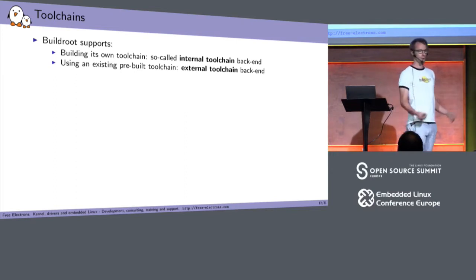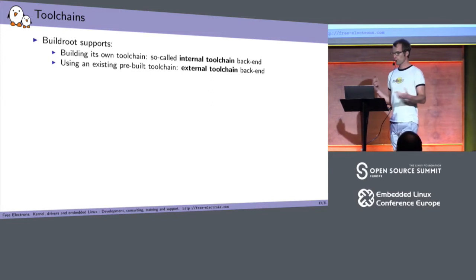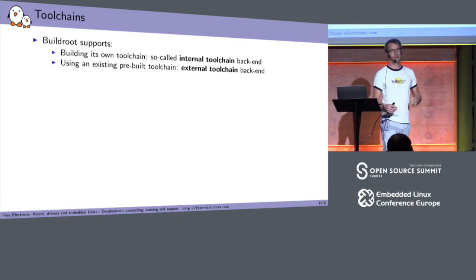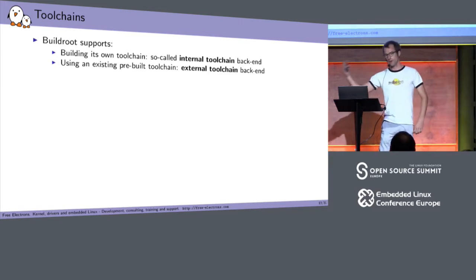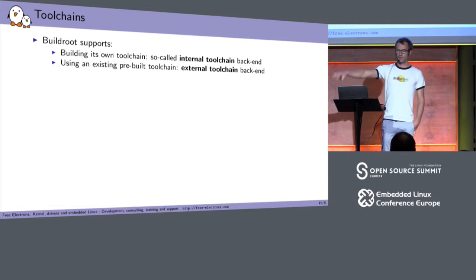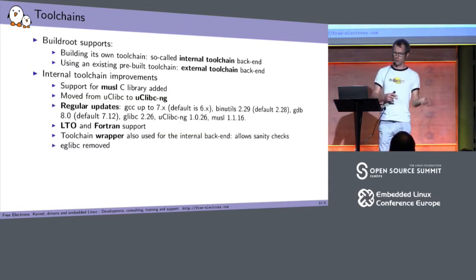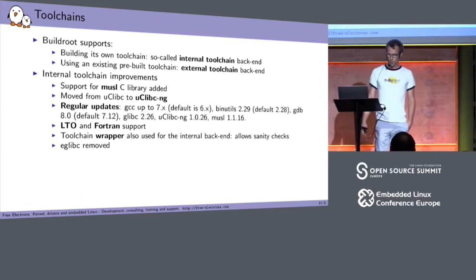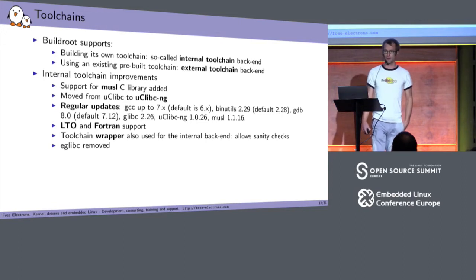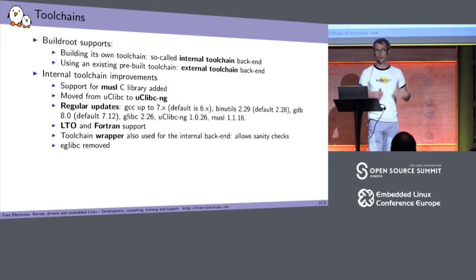On the toolchain side, Buildroot supports two mechanisms: we can either build our own toolchain — where Buildroot builds binutils, first-stage GCC, the C library, and the final GCC — which we call the internal toolchain backend. Or Buildroot can use existing toolchains you provide, which we call the external toolchain backend. On the internal toolchain side, we added support for musl, the C library that is growing in popularity. We moved from uClibc, which was pretty much a dead project, to uClibc-ng, which is an actively maintained fork. A number of the architecture support improvements I mentioned were contributed by the uClibc-ng maintainer.